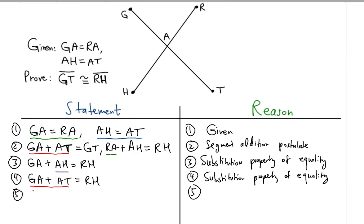GT as a result is equal to RH because both GT and RH are equal to GA plus AT. We can basically set these guys equal because they both equal to the sum of GA and AT. This is called the transitive property of equality.